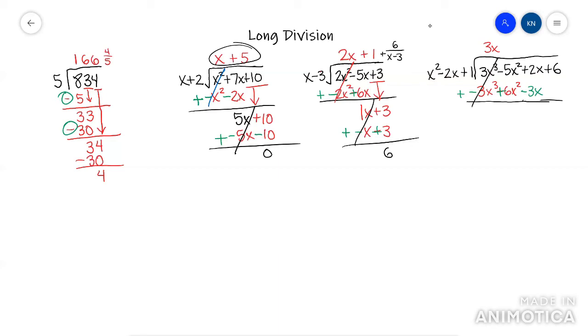Combine. These cancel. Negative 5X squared plus 6X squared is 1X squared, 2X minus 3X is negative 1X. And I drop my next term. So plus 6.